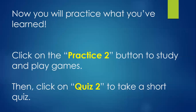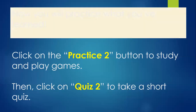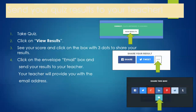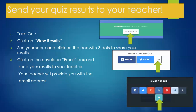Now you will practice what you've learned. You're going to click on the Practice 2 button to study and play games. Then you're going to click on Quiz 2 to take a short quiz. Remember to send your quiz results to your teacher. First take your quiz, second view your results, third click on the box with the three dots to share your results, and select the envelope email box to send the results to your teacher. Your teacher will provide you with their email address for you to send this information.